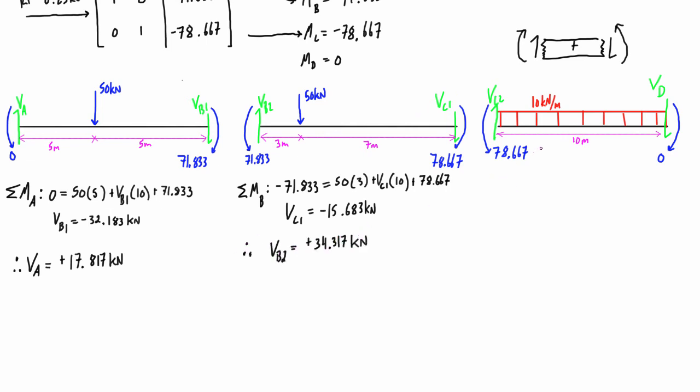We're going to do this one more time for span CD. So we're going to take the sum of moments about C, and we're going to find that VD is equal to negative 42.133 kilonewtons. So if that's going up, then we have 100 kilonewtons pressing down from the distributed load, 10 times 10, and it's passing through that centroid at 5 meters. So we have 100 going down, we have 42.133 going up. So the shear at C is going to be equal to positive 57.867 kilonewtons, just to the right of point C.